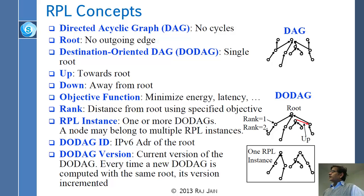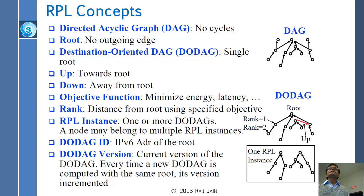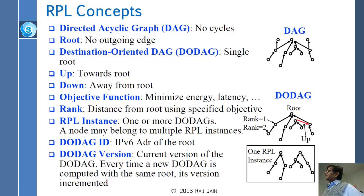Each DODAG has a DODAG ID, which is basically the IPv6 address of the root — a 128-bit ID. As long as the root doesn't change, the ID doesn't change. There is also a DODAG version number: every time the DODAG changes its shape, it becomes a new version. The root keeps track of that version number, and in all announcements it says 'I am using version five.' If someone has old information from version four, they must update right away.